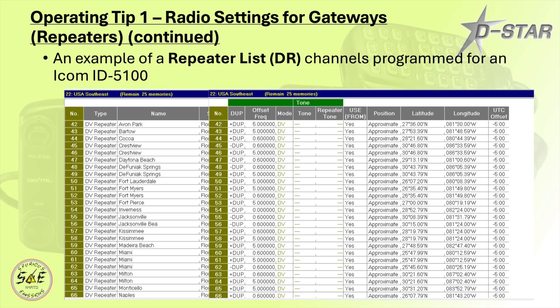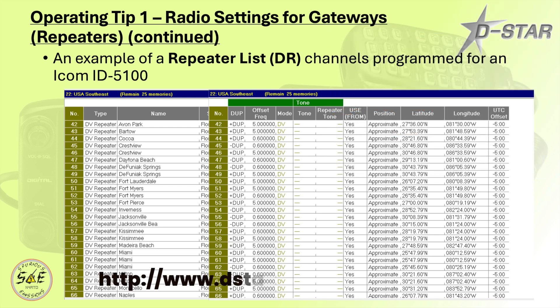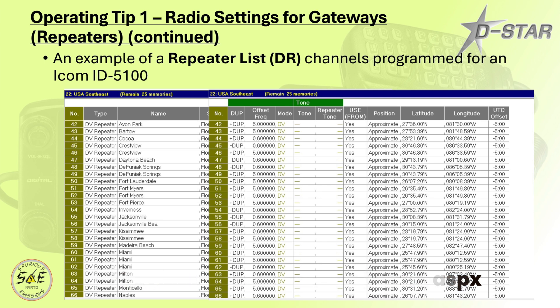Here is an example of repeater list or DR memory channels that have been programmed into an ID5100. These were downloaded from a website called DSTARinfo.com. Many radio manufacturers also have DR lists that can be downloaded. On the left hand side of the programming you'll find the repeater, the location, and also the RPT1 and RPT2 settings which are the most important piece, as well as on the far right the GPS coordinates of the specific repeaters so you can use your radio's GPS to find the closest repeater — this works out great when you're traveling.